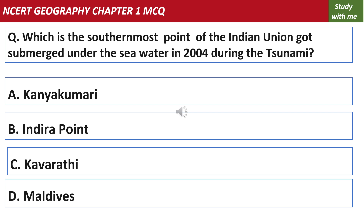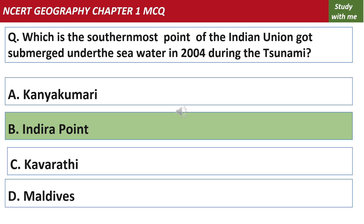Which ship is the southernmost point of the Indian Union that got submerged under sea water in 2004 during the tsunami? The answer is Indira Point.